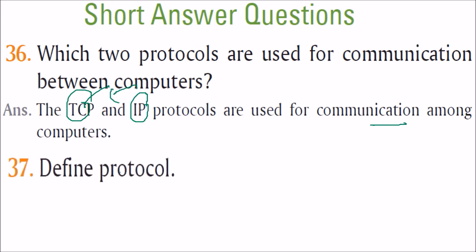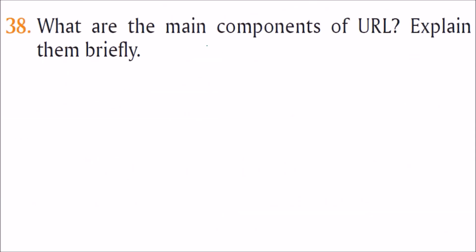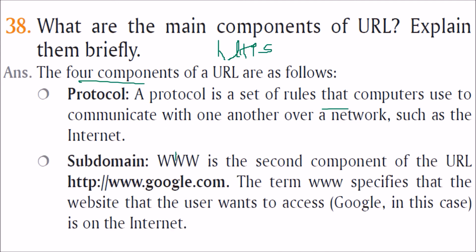A protocol is a set of rules required to carry out communication on a network — just like dress code rules at a party or meeting, everyone must follow them. The main components of a URL: first is HTTP or HTTPS, which is the protocol — a set of rules that computers use to communicate over a network. Then you have the subdomain www, followed by a colon and double forward slash, then www again as the second component of the URL.